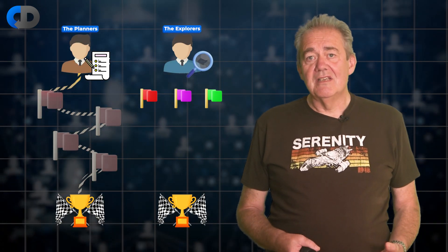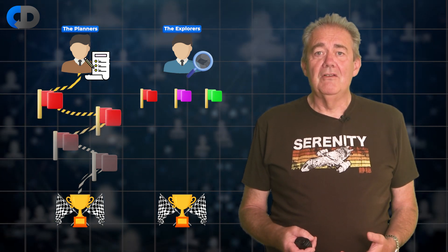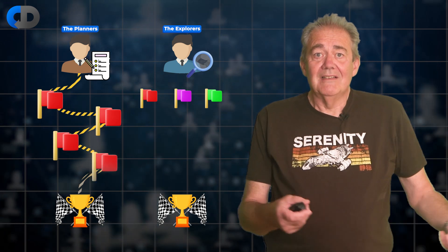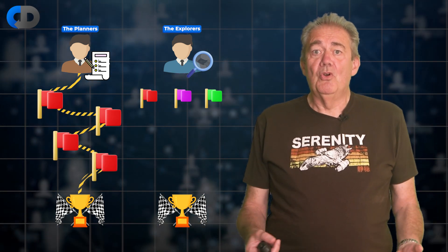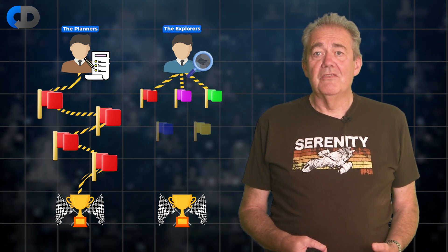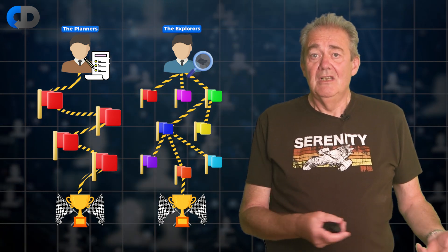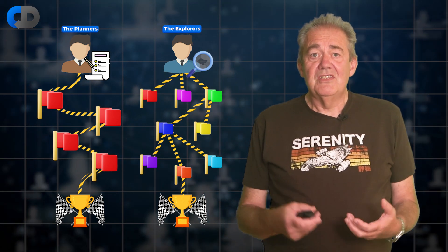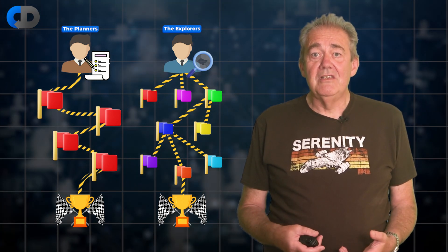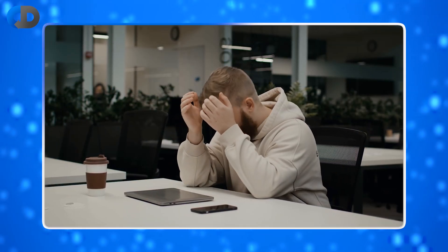There has always been a tension between two groups in software development: the planners and the explorers. The planners believe that the secret to success is to plan in enough detail and with enough accuracy to know what to do and when to do it. The explorers, and I'm firmly in that camp, believe that software development is a lot more complicated than that, and so instead it depends on a process of continual exploration, learning and discovery. The secret to successful software development is to optimise, to be really good at that process of learning and discovery. I think that this big difference in perspective underpins the waste that is so often common in software development. Pick the wrong viewpoints and you end up doing the wrong things.